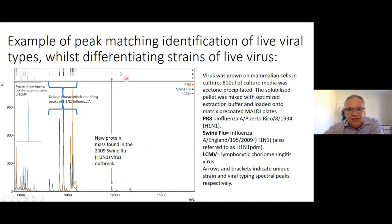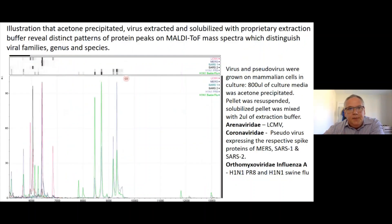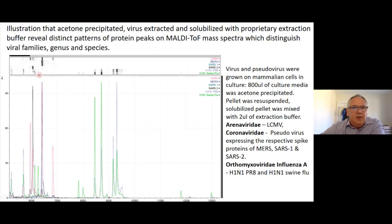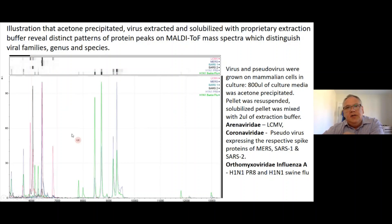What we can do is distinguish between viral families, genus, and species. Here we have the H1N1 pattern, the LCMV pattern, and our SARS pseudoviruses — we can see there's a difference between SARS-CoV-2 and SARS-CoV-1, although I don't know what that is yet. There are clear pattern changes, and it gives you the opportunity not only to look for SARS but to look for a whole host of different viruses and match and decide what they are.